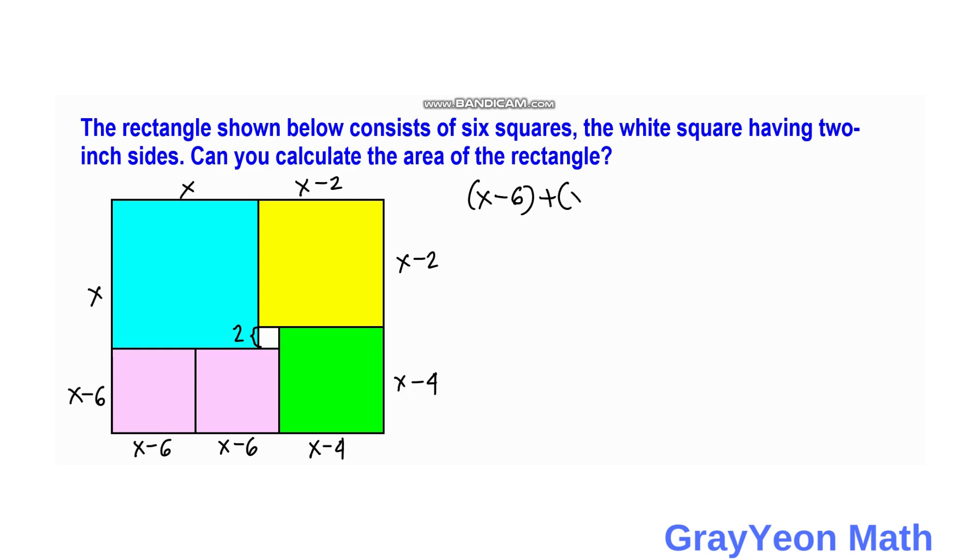plus x minus six plus x minus four is equal to x plus x minus two. Then simplifying we have three x minus 16 is equal to two x minus two.